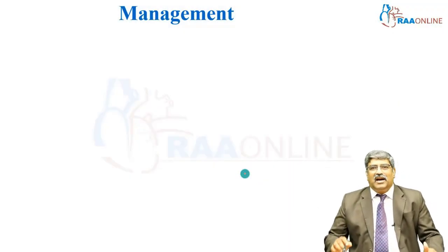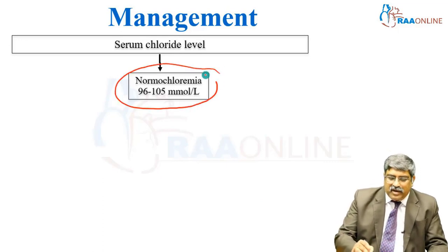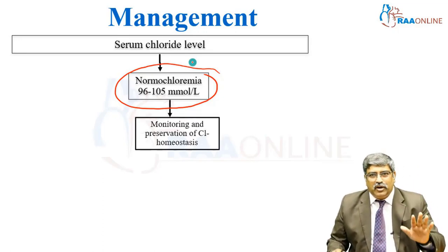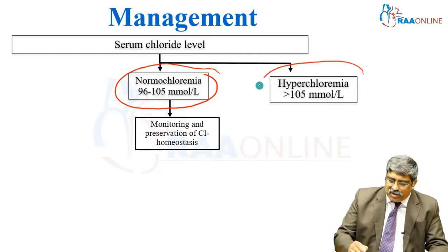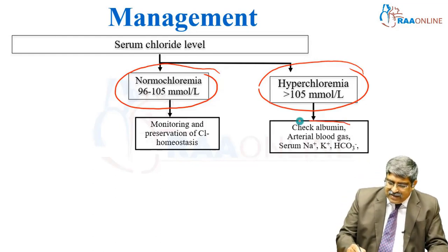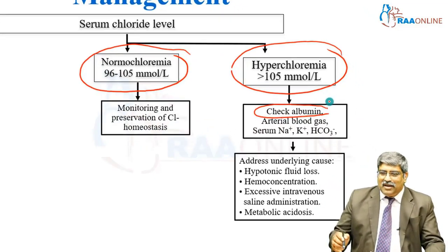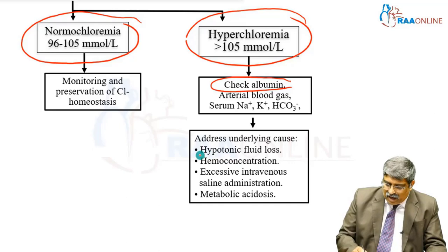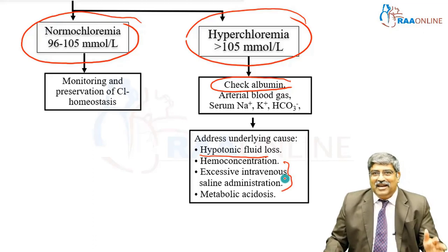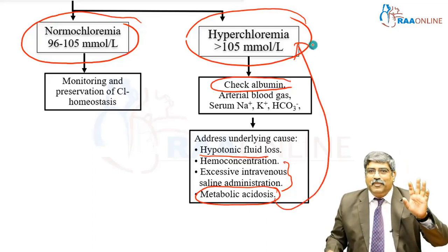To manage high and low levels of chloride, first measure the serum chloride. If it is at a normal level of 96 to 105 millimoles per liter, monitor and preserve chloride homeostasis. If chloride is high — greater than 105 millimoles per liter — check albumin, arterial blood gas, serum potassium, chloride, and bicarbonate ion. Address underlying causes such as hypotonic fluid loss, hemoconcentration, excessive intravenous saline administration, or metabolic acidosis. Always remember that metabolic acidosis is associated with hyperchloremia.